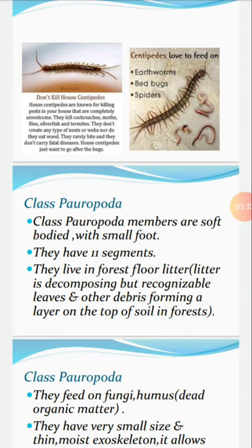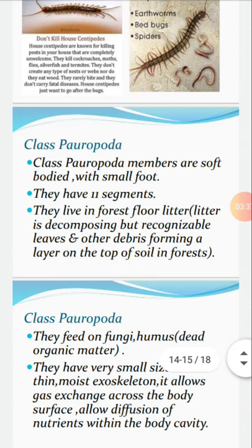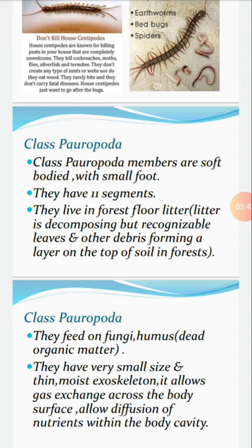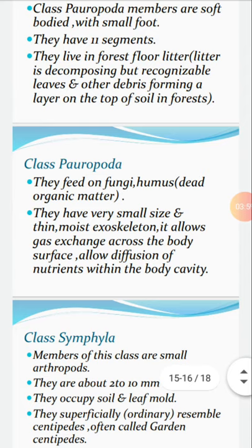The next class is called Pauropoda. Class Pauropoda members are soft-bodied with small feet. They have segments and live in forest floor litter. Litter is decomposing but recognizable leaves and other debris forming a layer on top of soil, especially in forests. They feed on fungi, humus, and dead organic matter. They have very small size and a thin moist exoskeleton which allows gas exchange across the body surface and diffusion of nutrients within the body cavity.